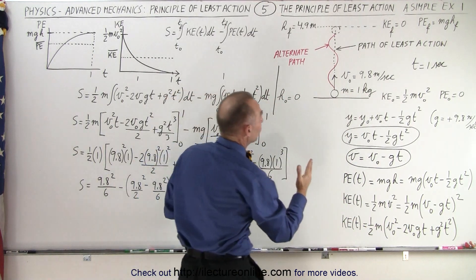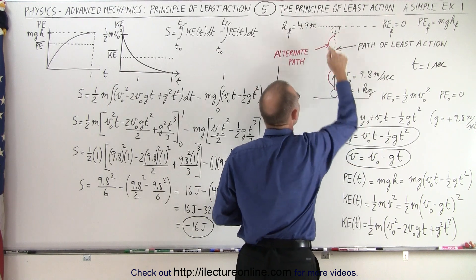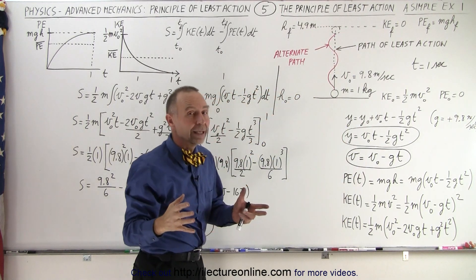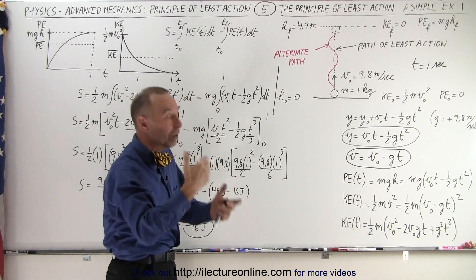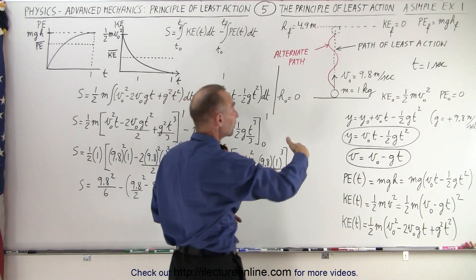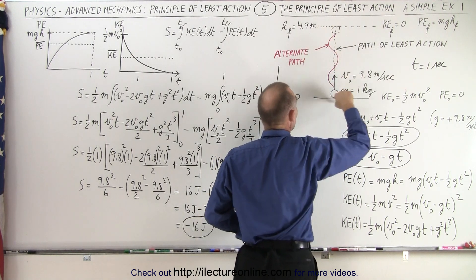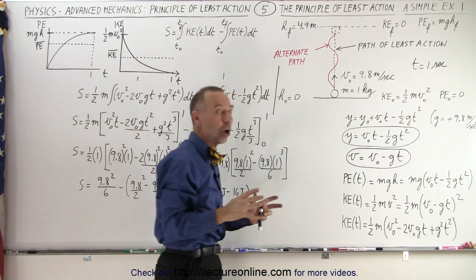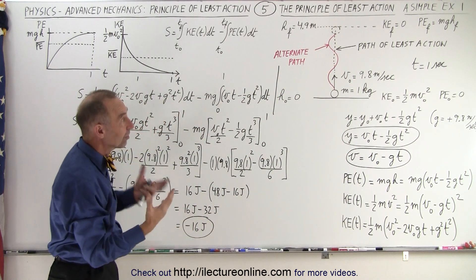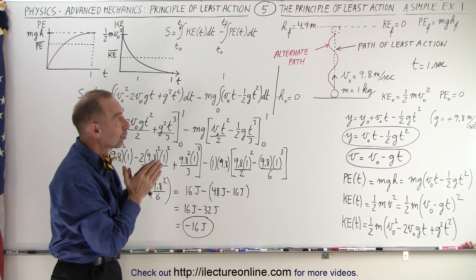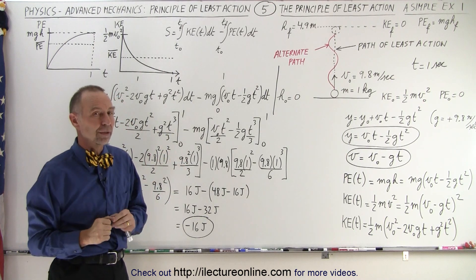The straight line is assumed to be the path of least action. We also have an alternate path which will have a greater action, because it will require a greater velocity and greater kinetic energy in order to go from here to there in the same amount of time taking a longer path. The average potential energy will be about the same, so you'll have a greater difference between the kinetic energy and the potential energy.